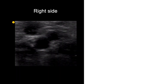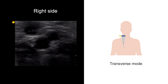Remember that the probe marker at the top left of the image should always represent the right side of the patient when imaging the carotid arteries in the transverse mode. So when imaging the right side of the neck, the larger, deeper artery on the left side of the image — that is the lateral side of the neck — is the ICA.